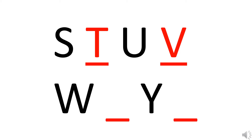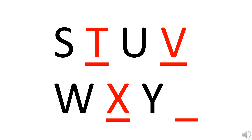Now that we have written letter V, we have letter W and after W we have a blank. So what comes after W? Yes, letter X comes after W. So we will write letter X here. Now that we have written letter X, we have letter Y after that and after Y we have a blank. So what will come after Y? Yes, letter Z. So we will write letter Z here.